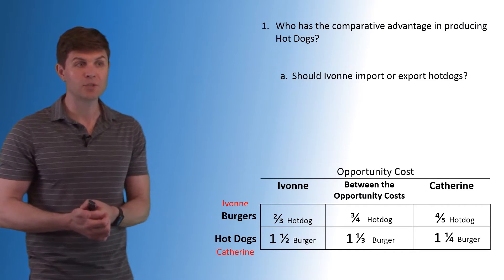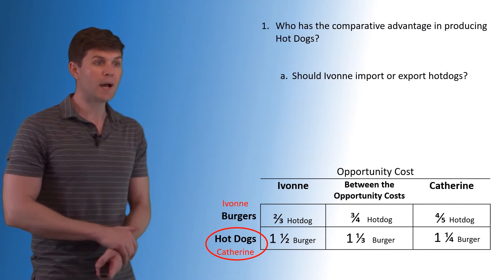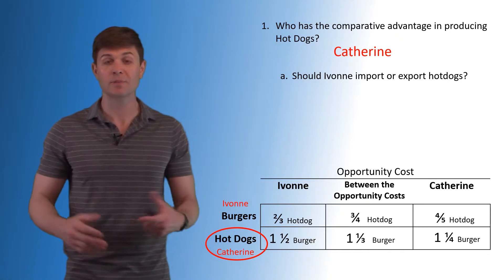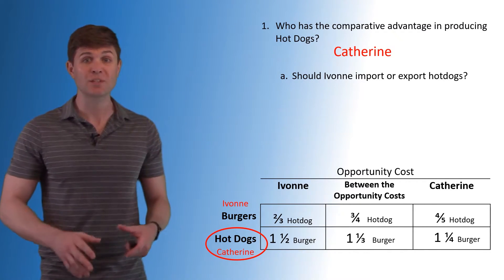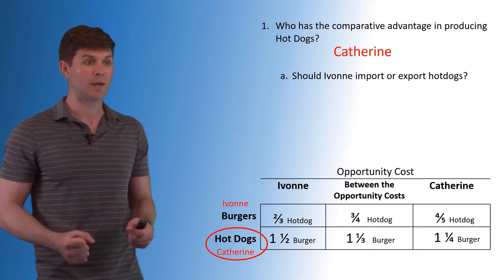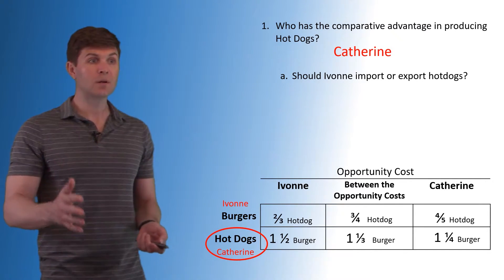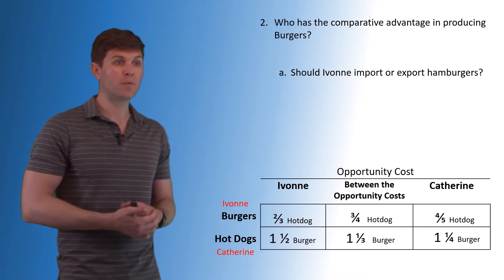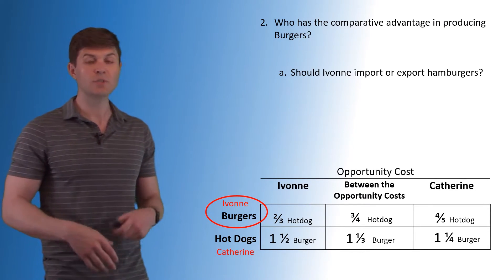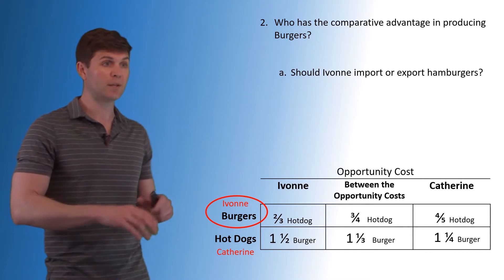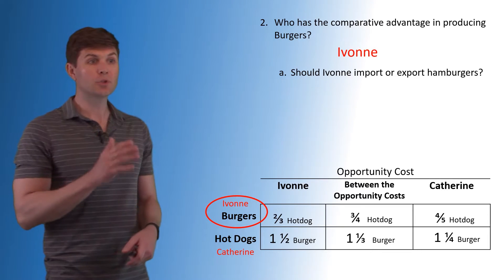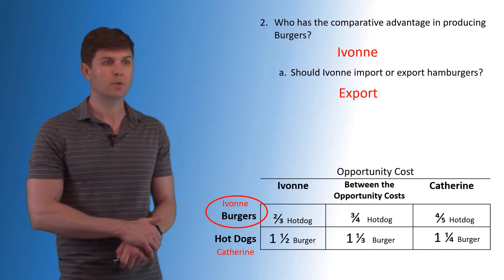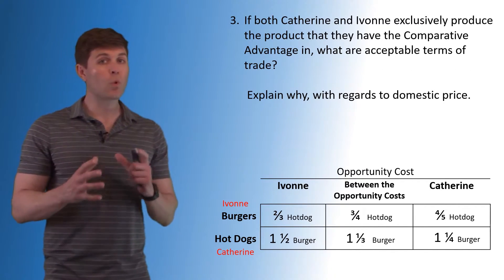Who has the comparative advantage in producing hot dogs? We look down to our chart — Catherine has the comparative advantage in producing hot dogs. Should Yvonne import or export hot dogs? If Catherine has a comparative advantage in something, she's going to be exporting it. You export the thing you have the comparative advantage in. So Catherine exports hot dogs, meaning Yvonne should be importing hot dogs. Who has the comparative advantage in producing burgers? Yvonne does — she sacrifices fewer hot dogs than Catherine. Should Yvonne import or export hamburgers? If Yvonne has the comparative advantage, she should be exporting hamburgers.